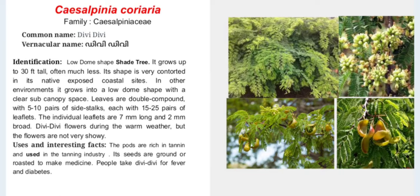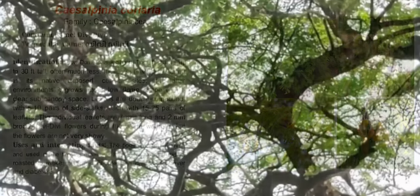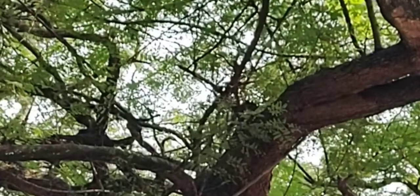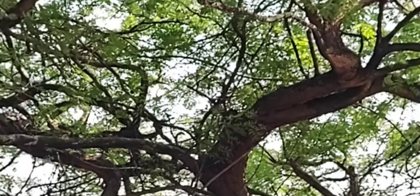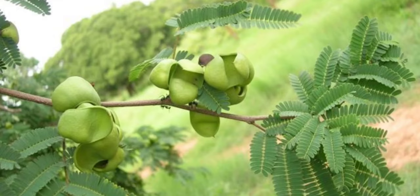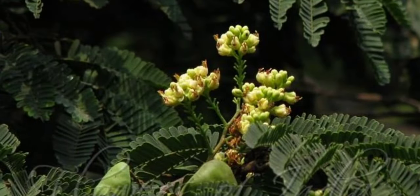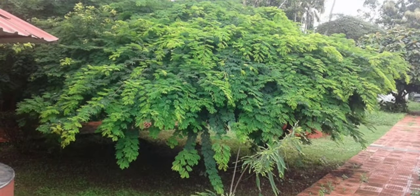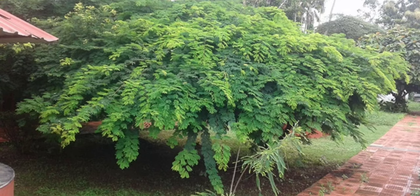Caesalpinia coriaria, family Caesalpiniaceae. Commonly and vernacularly known as divi-divi. This tree is a low dome-shaped shade tree, very contorted in its native exposed coastal sites. In other environments it grows into a low dome shape with a clear sub-canopy space. Divi-divi flowers during warm weather but the flowers are not very showy. The pods are rich in tannin and used in the tanning industry. Its seeds are ground or roasted to make medicines.